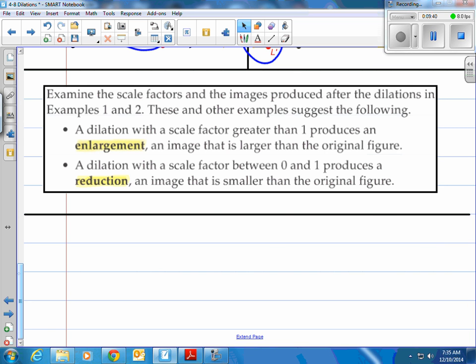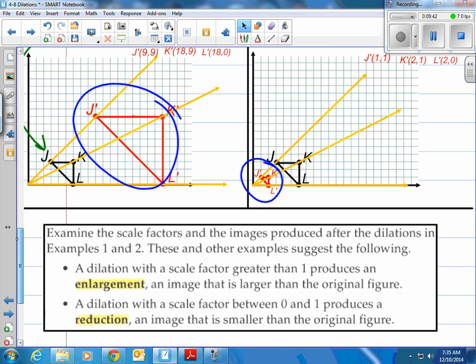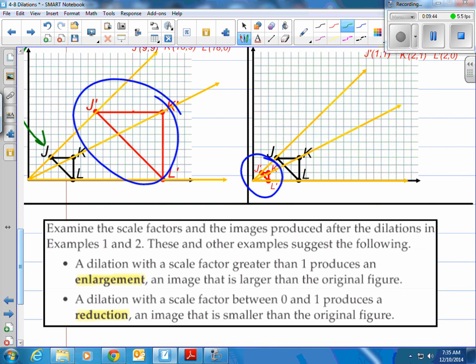So let's look at this last statement down here. It says if you examine the scale factors that we just did, and this one was 3, and this one was one-third, and the images produced after the dilation is example 1 and 2, take a look. These and other examples suggest the following. A dilation with a scale factor greater than 1 produces an enlargement. So in the first one, we had 3. That's larger than 1, so you're going to get an enlargement.